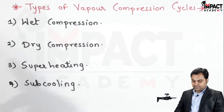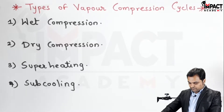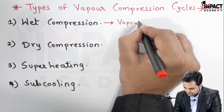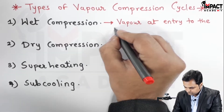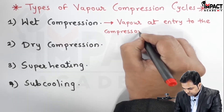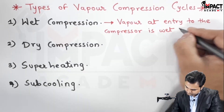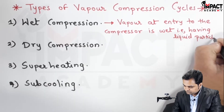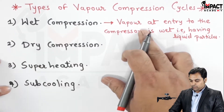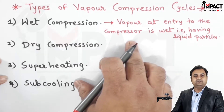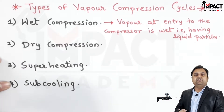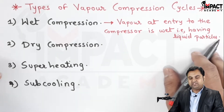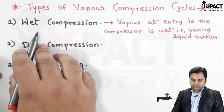In wet compression, the vapor at the entry to the compressor is the vapor refrigerant, and at entry to the compressor it is wet — meaning it is having liquid particles. So it would be called as wet compression.